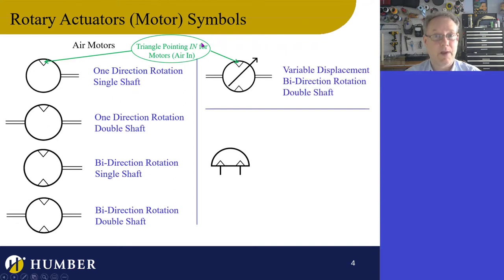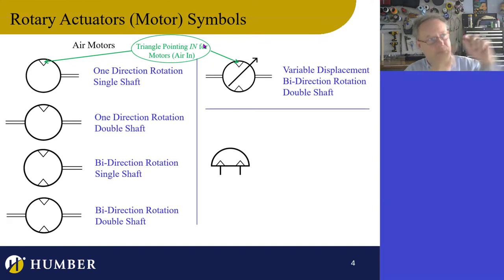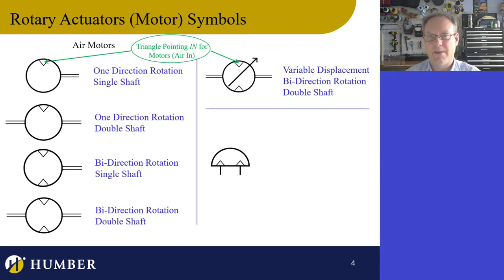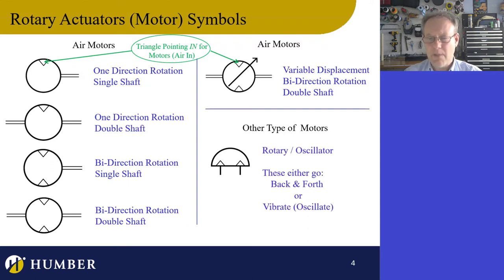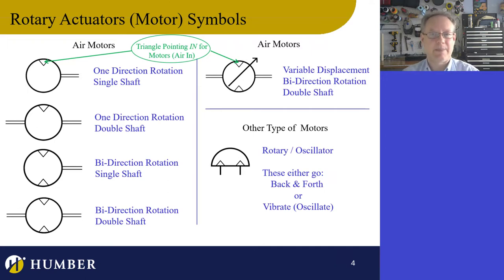We also have adjustable rotary actuators — whenever you see an arrow on a line in electronics, pneumatics, hydraulics, or any discipline, it indicates something is adjustable. There's also an oscillator, which doesn't go around in circles but goes back and forth. These are the air motors or rotary actuators; we'll use them in application as we go.